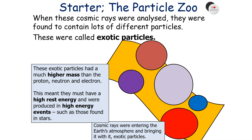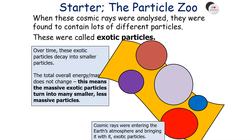These exotic particles have a much higher mass than the proton, neutron, and electron, meaning they must have had a high rest energy and were produced in high energy events such as those found in stars. The cosmic rays were entering the Earth's atmosphere and bringing with them these exotic particles. Over time, these exotic particles decay into smaller particles, but the total overall energy and mass doesn't change.